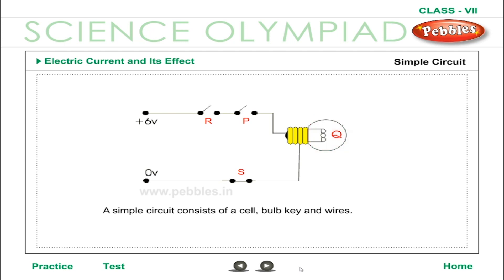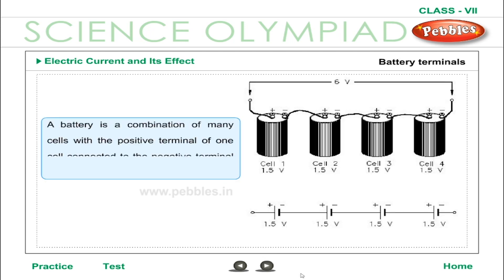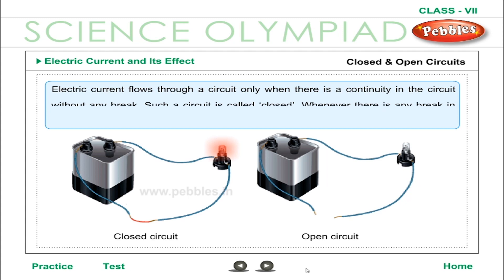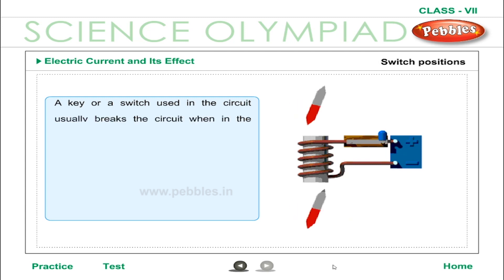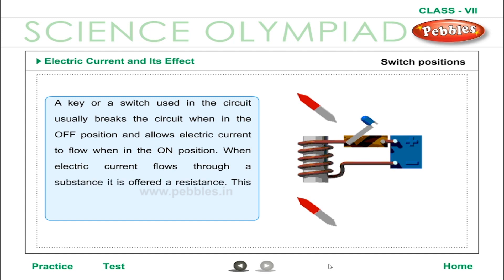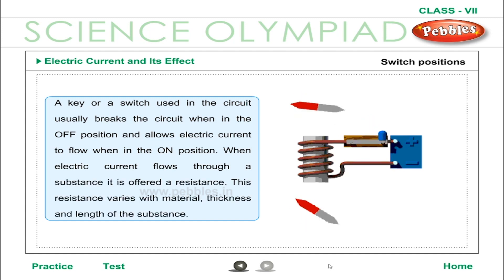A simple circuit consists of a cell, bulb, key, and wires. A battery is a combination of many cells, with the positive terminal of one cell connected to the negative terminal of the next. Electric current flows through a circuit only when there is continuity — no break — in the circuit; such a circuit is called a closed circuit. Whenever there is a break, current stops flowing — this is called an open circuit. A key or switch breaks the circuit when off and allows current to flow when on. When electric current flows through a substance, it is offered a resistance.